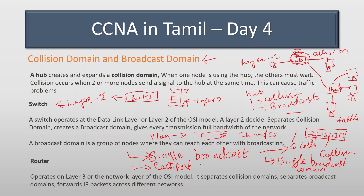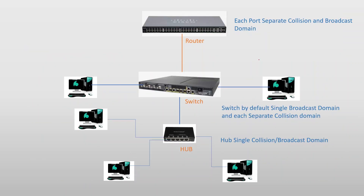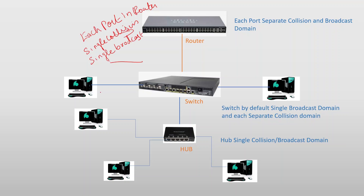Each port on a switch is a single collision domain. This is the difference between hubs and switches. For the switch in default configuration, we have a single broadcast domain, but each port has its own single collision domain.